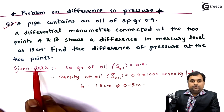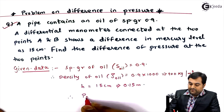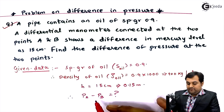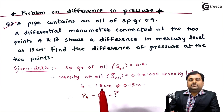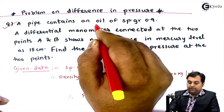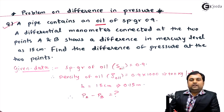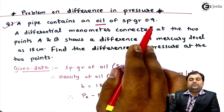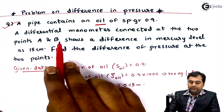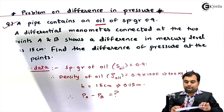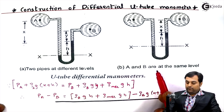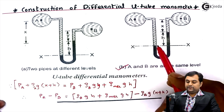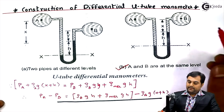We need to find the difference of pressure Pa minus Pb, where Pa is the pressure in pipeline A and Pb is the pressure in pipeline B. Since only one liquid — oil — is mentioned, both pipes A and B carry oil of specific gravity 0.9. Since the fluid is the same, we can refer to figure B, which applies when fluids are at the same level.